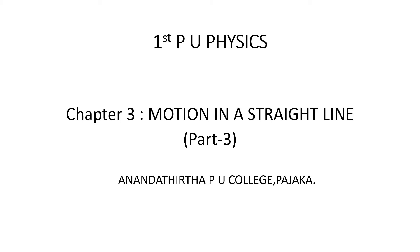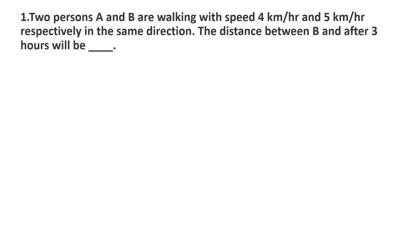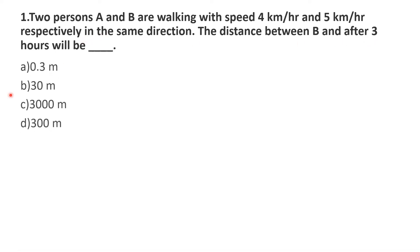Hi students, this is the third video of multiple choice questions from the chapter Motion in a Straight Line. Let us move into the first question. Two persons A and B are walking with speed 4 km per hour and 5 km per hour respectively in the same direction. The distance between B and A after 3 hours will be: options are A) 0.3 meter, B) 30 meter, C) 3000 meter, D) 300 meter.